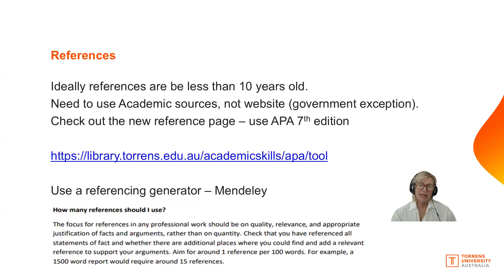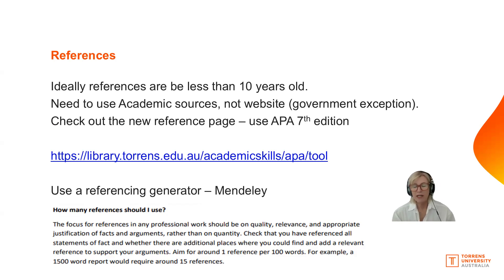Ideally, references are less than 10 years old. But if it's something like a physiology textbook, that's okay — the content won't have changed. Or if it's a government website that hasn't been updated in the last 10 years, try to see if there's a more updated version. Make sure you have a look at the APA 7 referencing page — the Torrens edition did change last year. No websites please, except for government websites.